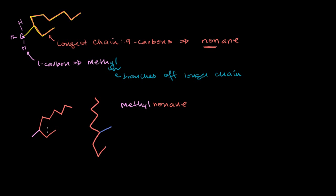What you do is you number the carbons on the longest chain — the main backbone — and you number them so that the methyl group is attached to the lowest possible number. There are two possible ways to number this chain: starting from one end gives you the methyl on carbon 7; starting from the other end gives you the methyl on carbon 3. You want the lowest, so you start from the end closest to the methyl group.